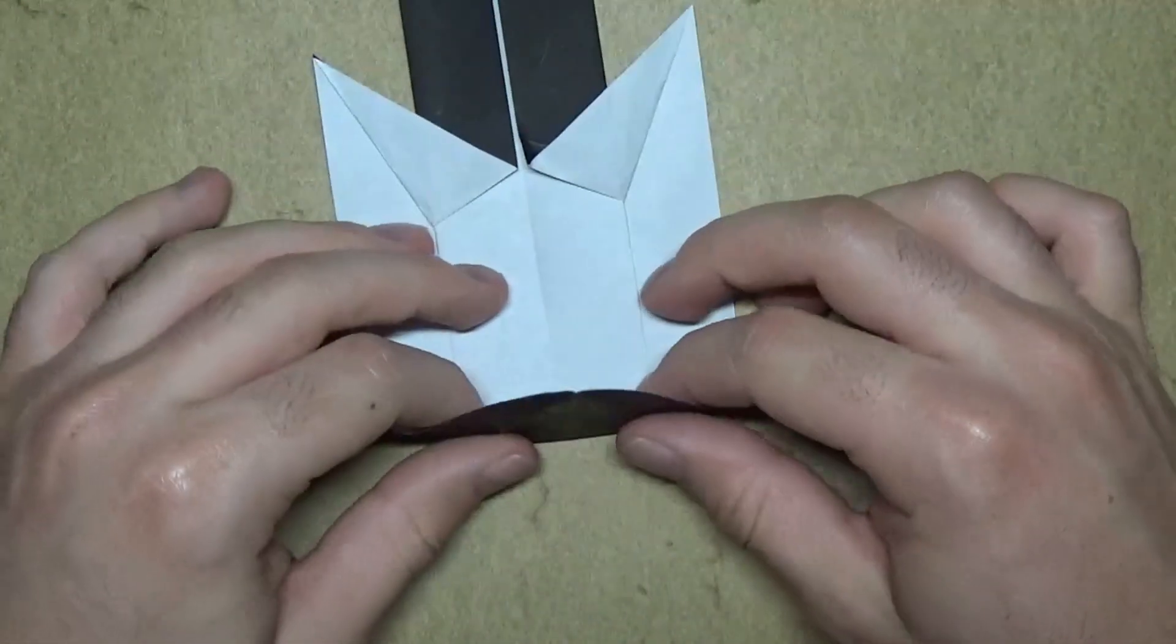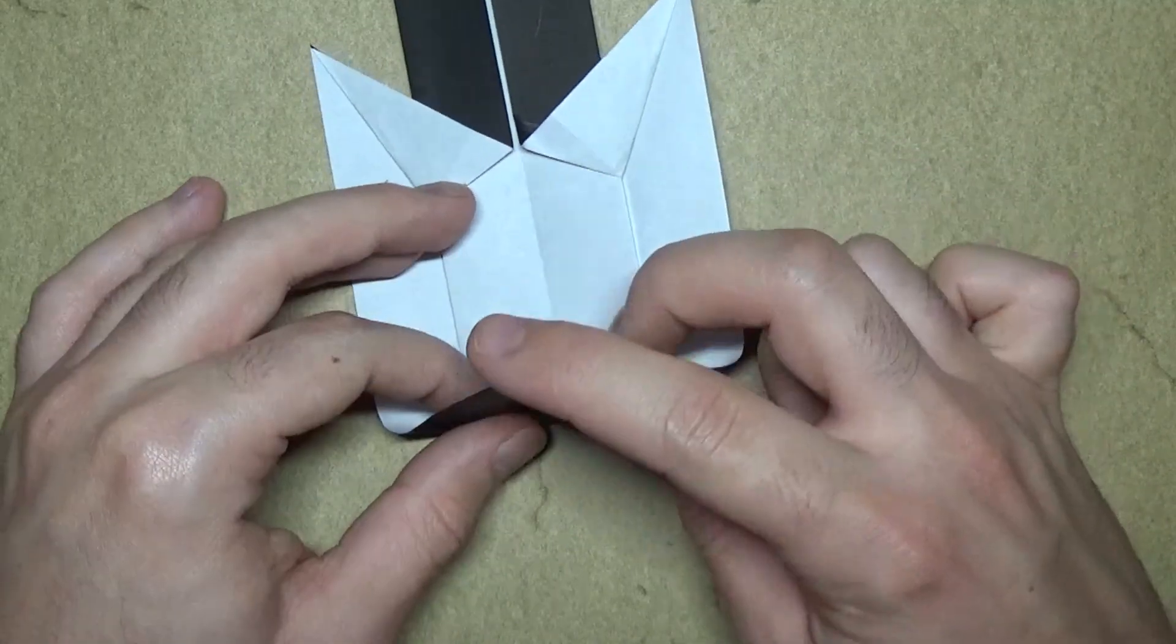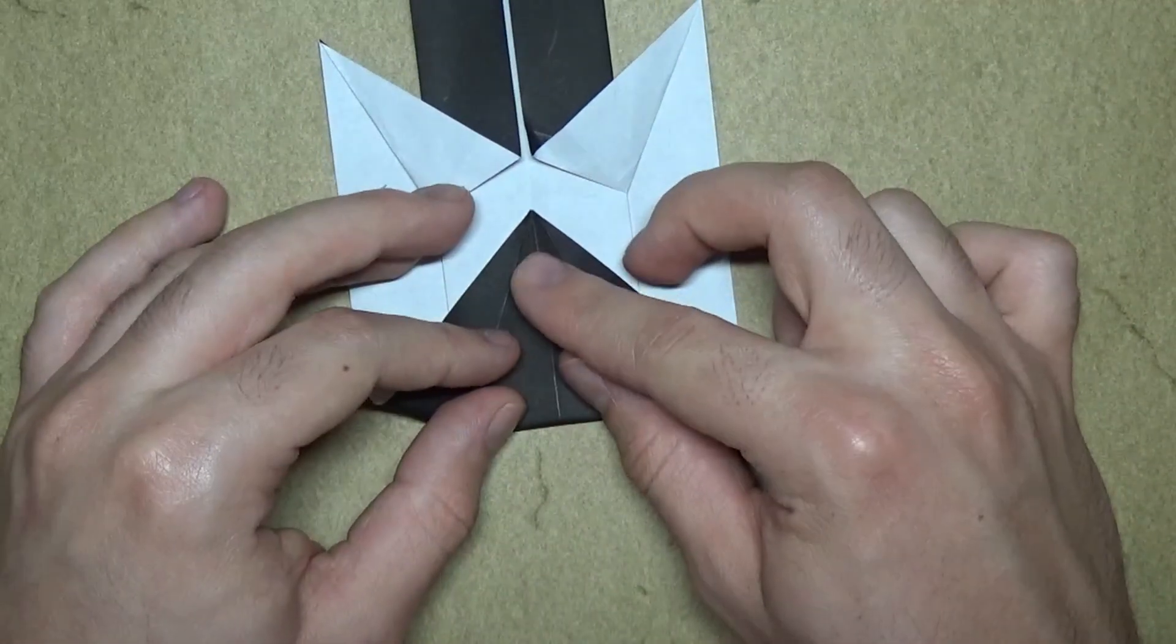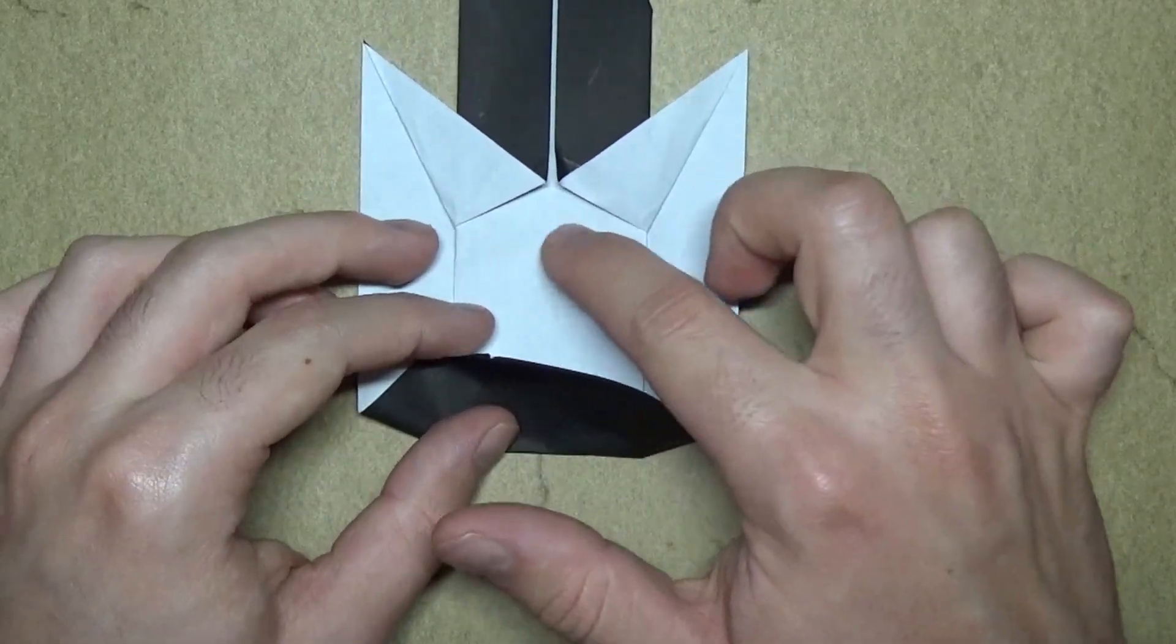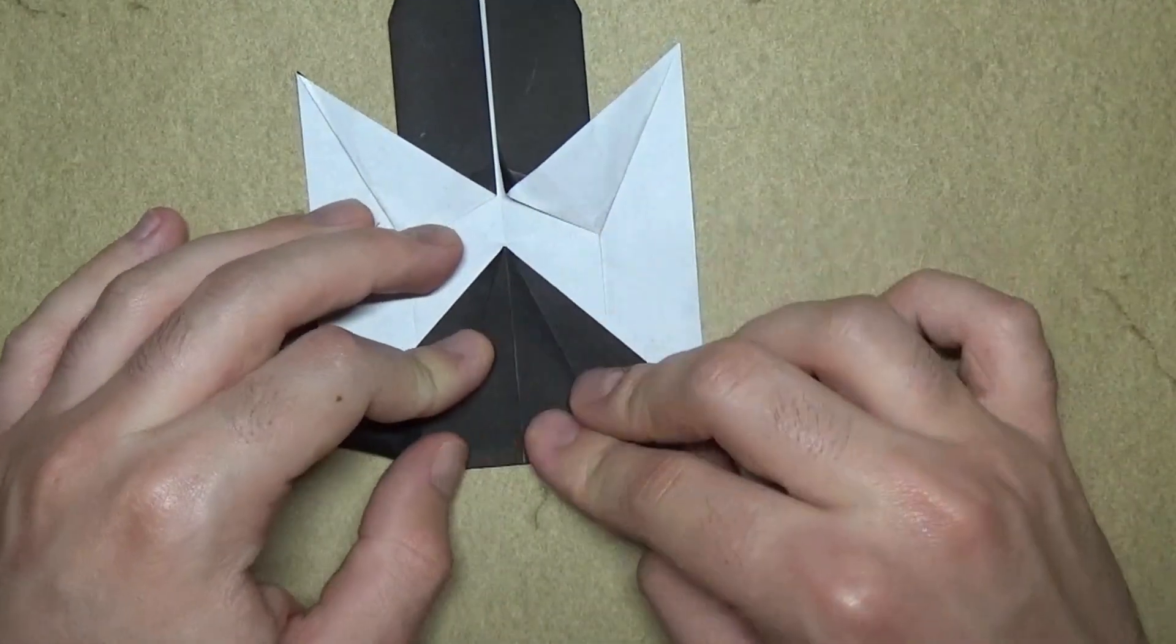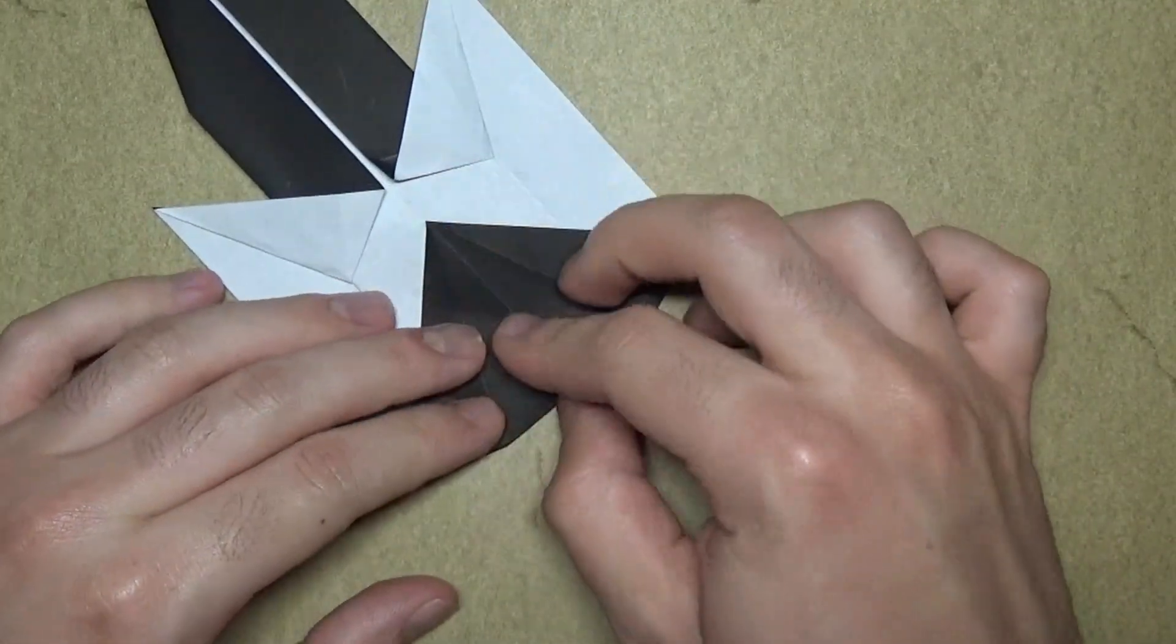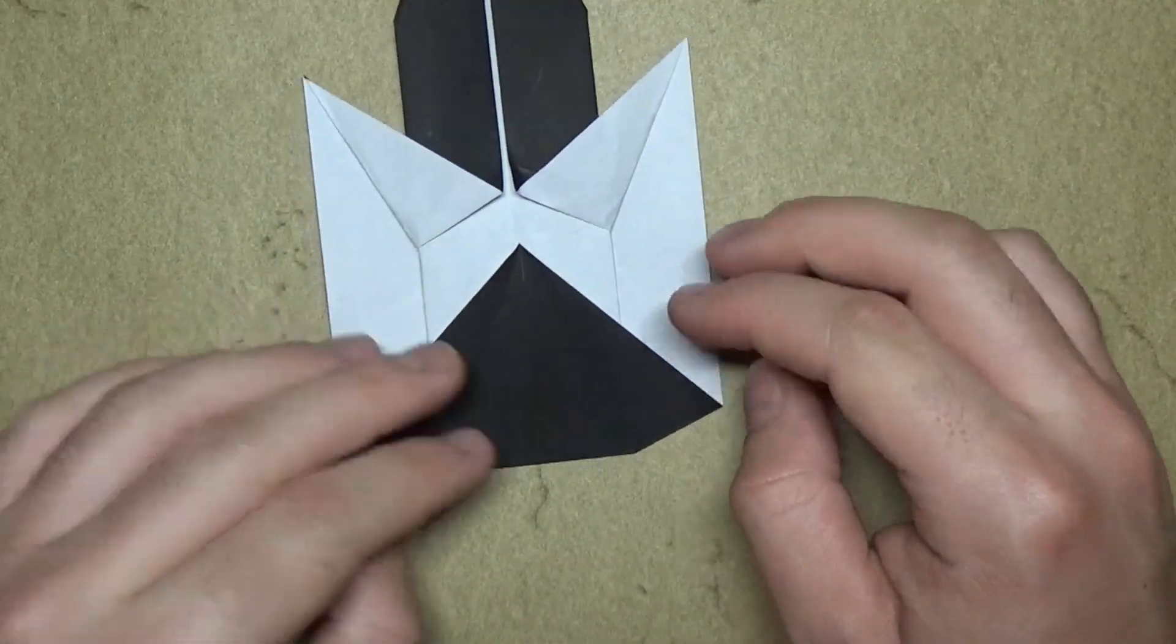Like this. Now take this part. We're going to squash it like this. So this corner aligns with the middle. And yeah, this point should pretty much go to this crease. This crease right here. There's a little crease right there. I don't know if you can see it. But it's there. Alright.